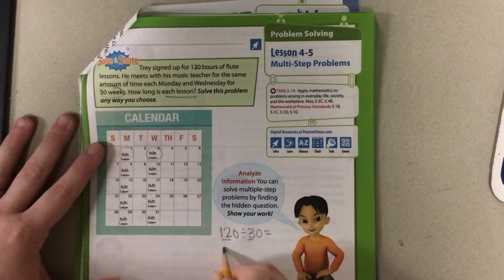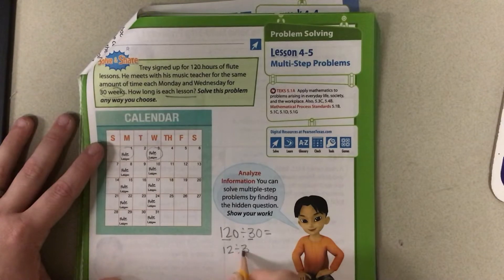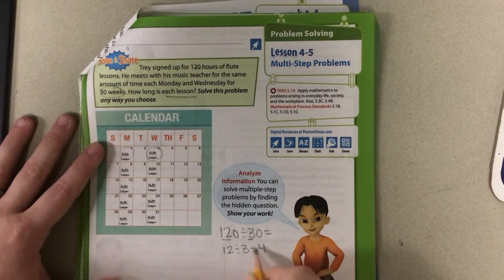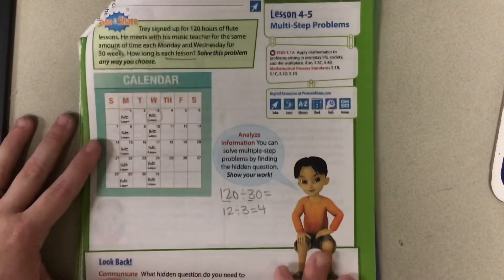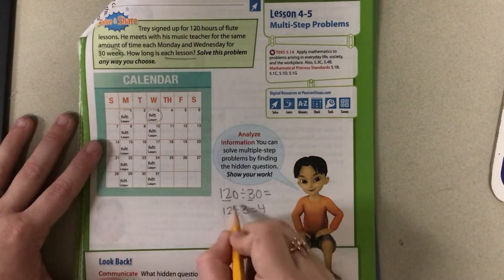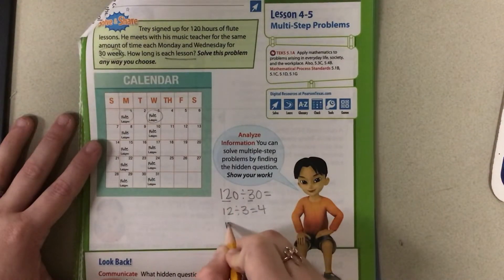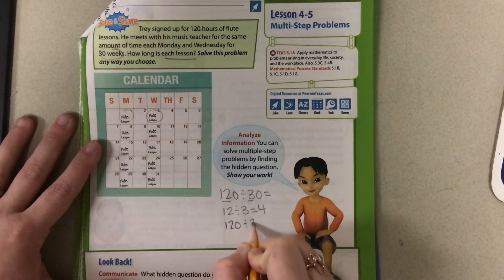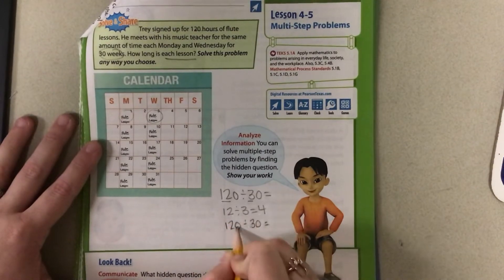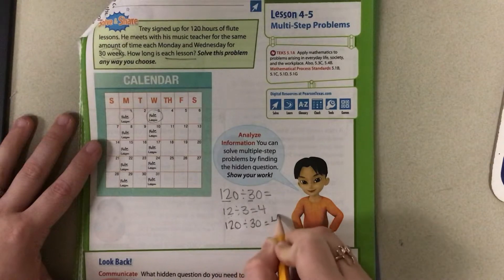Let's take our 12 and our 3 because those are compatible. 12 divided by 3 is 4 because 4 times 3 is 12. So now I can go back and add my 0. So I have 120 divided by 30. Remember when you do it to both sides, your answer stays the same.